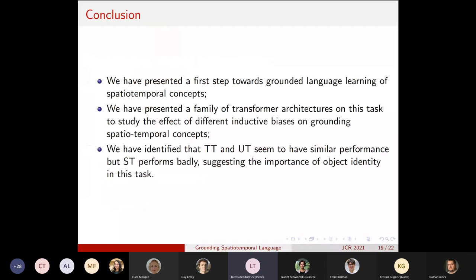So to conclude, we have presented a first step towards grounded language learning of spatiotemporal concepts. We have presented a family of transformer architectures on this task to study the effect of different inductive biases on grounding spatiotemporal concepts. And we have identified that aggregating along the time dimension seems to have no measurable impacts compared to having an unstructured transformer. But the spatial transformer performs quite badly. And this is suggesting that there is an importance of maintaining object identity in this task to be able to ground the language correctly.